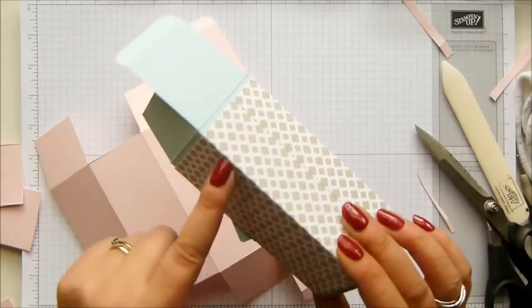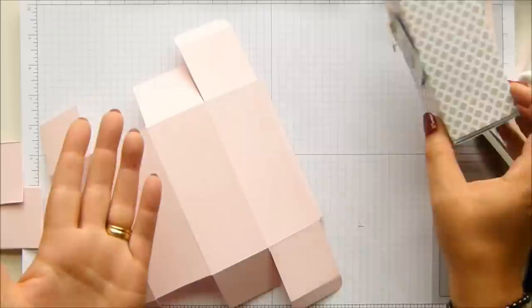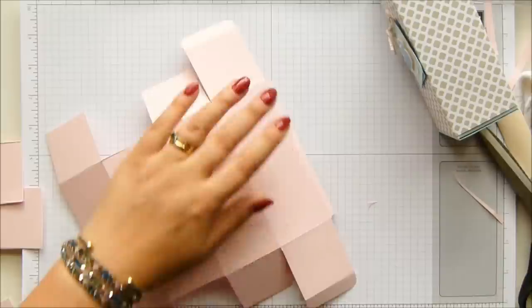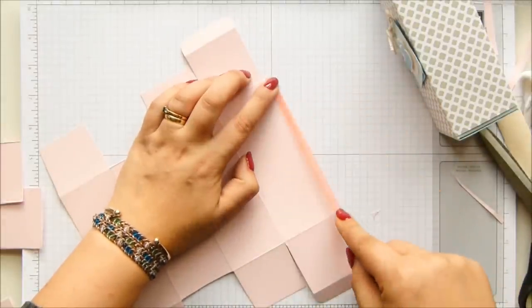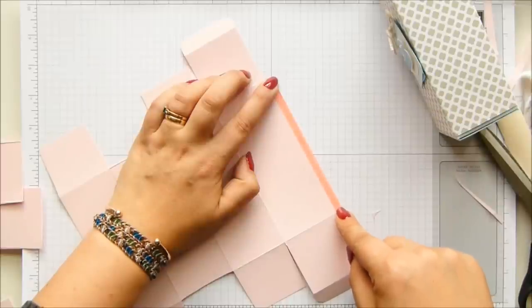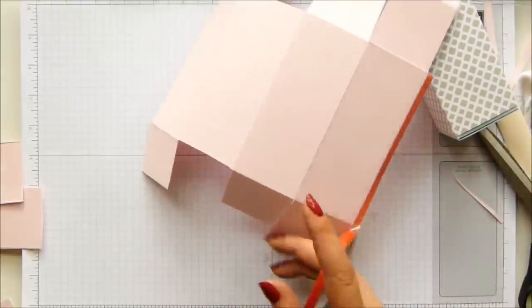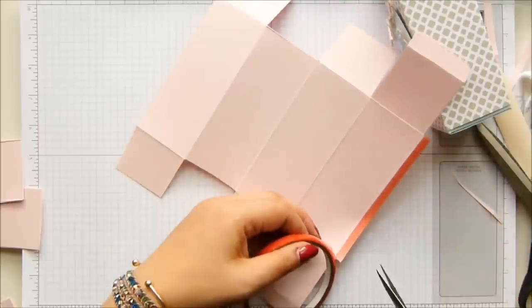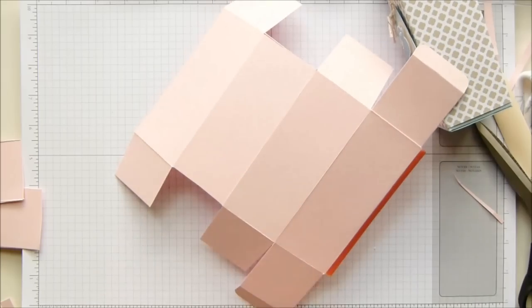Now before I put the designer series paper on, I want to stick it down. I only have sticky strip. There is a new terrible tape coming, I haven't got it yet, so I'm going to work with sticky strip. You work with the adhesive of your choice. I'm working with that because this is a super thin tiny little bit to stick my adhesive to. I know that if I use snail I'd be wibbling all over the place and I'd probably stick it to me.